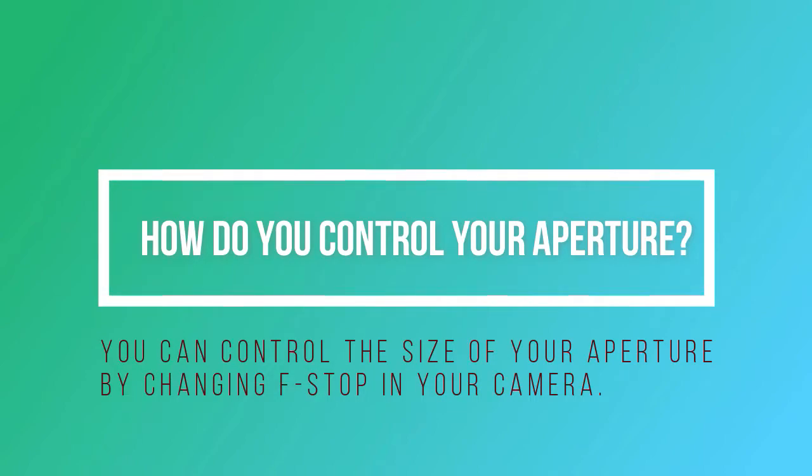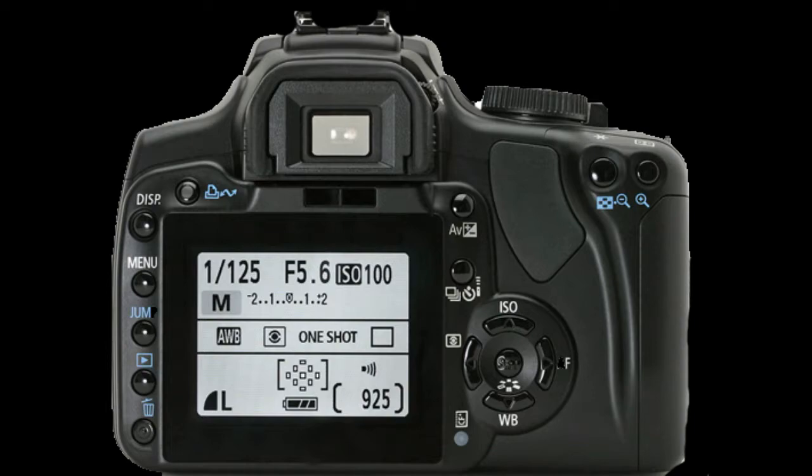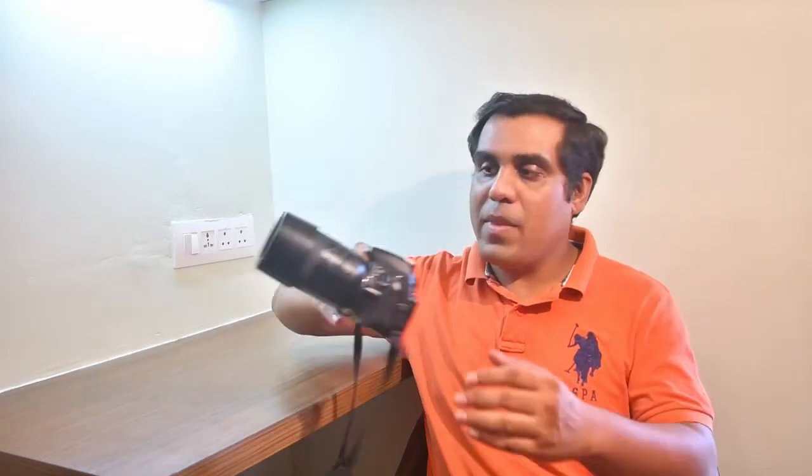You can control the size of your aperture by changing the f-stop in your camera. You can find the f-stop number on your camera screen. I have a Nikon D5200 in my hand — on the screen you can see the f-number. I have a dial here, and if I change the dial you can see the f-stop is getting changed. This is how I change my f-stop to control my aperture.